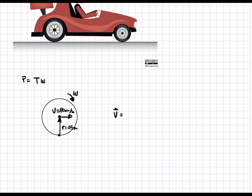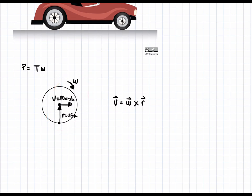We know that the velocity vector v equals the angular velocity vector crossed with the radius vector. Looking at the diagram, all these vectors are perpendicular — 90 degrees apart. The velocity points to the right, the radius points upward, and the angular velocity points either into or out of the page. Since they are all perpendicular, the cross product simplifies to a scalar equation: omega equals v divided by r.